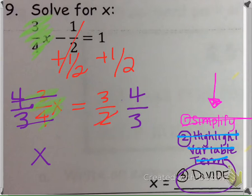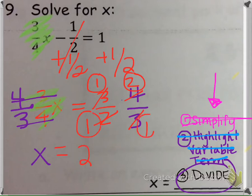Or we could also cross-simplify. 2 goes into 2 once, 2 goes into 4 twice, 3 goes into 3 once, 3 goes into 3, and then we'd have 1 times 2 is just 2 over 1 in the denominator, so we get 2.